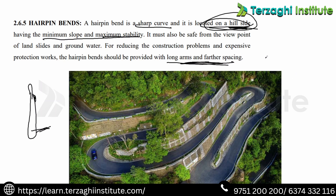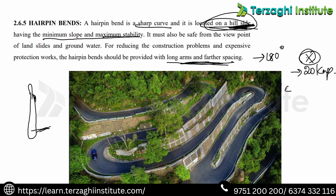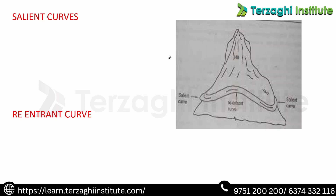Hairpin bends are important. The angle change is 180 degrees when we use a hairpin bend. It goes downhill to uphill on the hill side. The speed limit at hairpin bends is 20 km per hour — very important, note that. Minimum inner curve radius is 14 meters. The transition curve length is 15 meters.